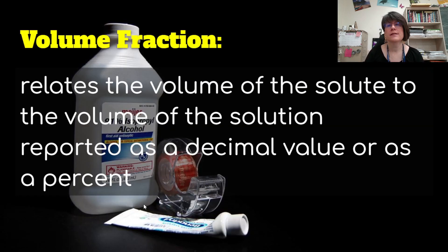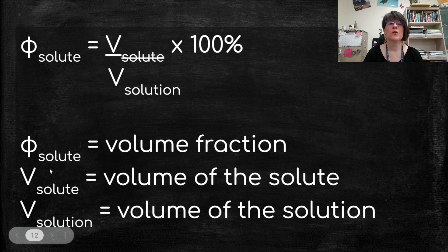The next way we can report concentration is volume fraction. And this relates the volume of the solute to the volume of the solution reported as a decimal value or as a percent again. So for this one, this is the Greek letter phi. The volume fraction, and it stands for volume fraction of the solute, equals the volume of the solute divided by the volume of the solution.